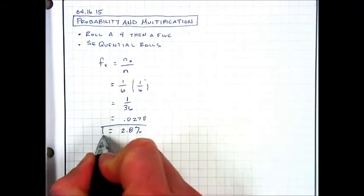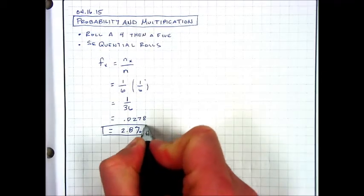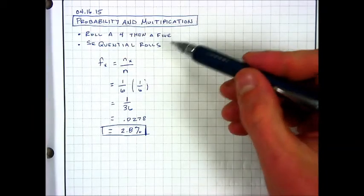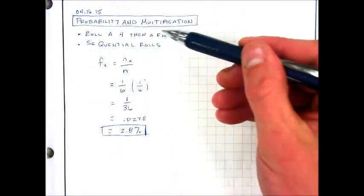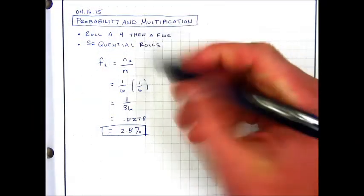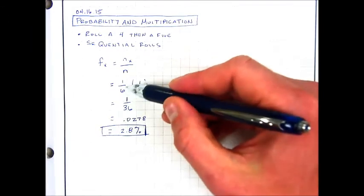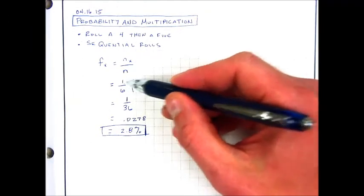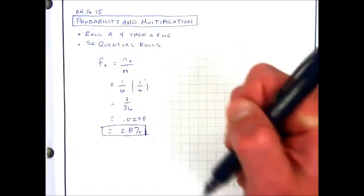We use multiplication to calculate the probability on sequential rolls—rolling a 4 and then a 5. We multiply the probability of event 1 happening by the probability of event 2 happening.